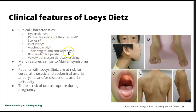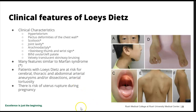Additionally, patients with Loeys-Dietz can have a bifid uvula — two uvulae — or even a cleft palate, and velvety translucent skin with easy bruising. You can see how someone could fulfill Ghent criteria for Marfan's and actually have Loeys-Dietz — both involve an enlarged aorta. But some features like the bifid uvula and wide-spaced eyes are a little more unique to Loeys-Dietz, though it's a difficult diagnosis to make clinically.